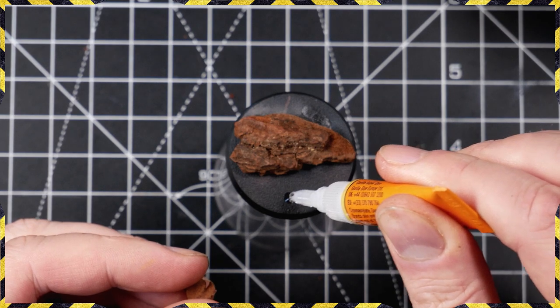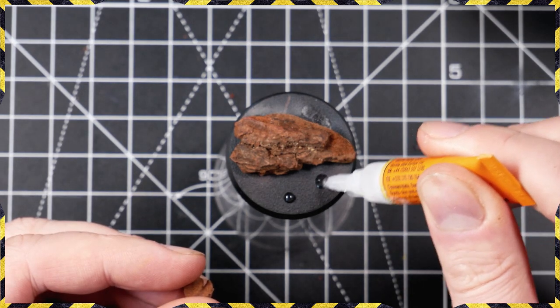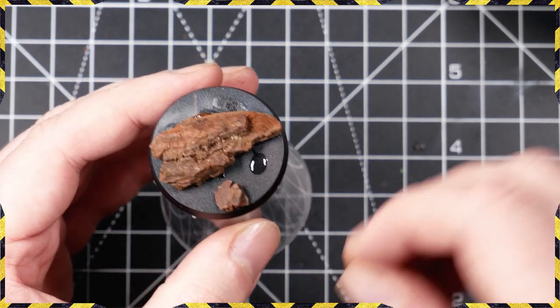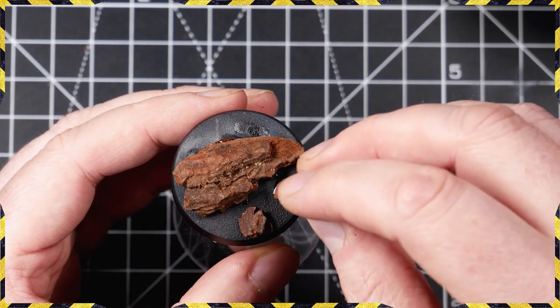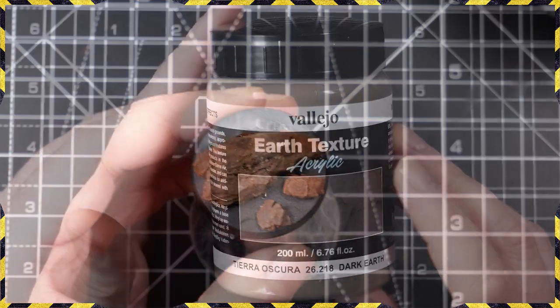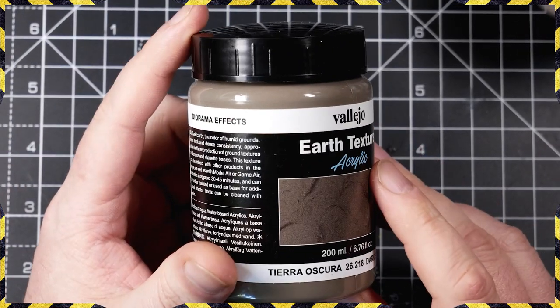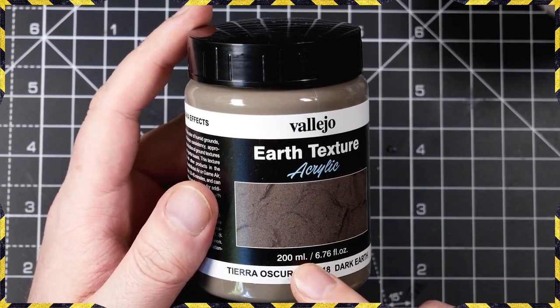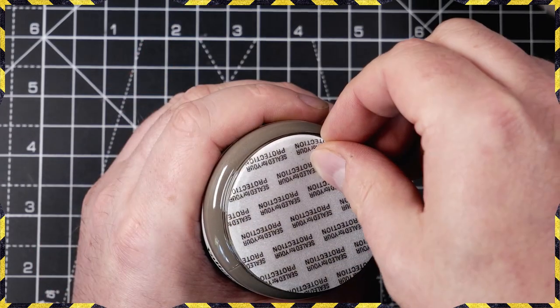Okay, so we are kicking things off with our Legion of the Damned marine base. We've just taken some bark, glued that down to a 40mm base to give him a nice bit of presence on the battlefield and make him stand on the rock. We're taking some Vallejo Earth Texture, this is a Dark Earth.